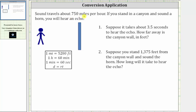Sound travels about 750 miles per hour. If you stand in a canyon and sound a horn, you will hear an echo. Number one: suppose it takes 3.5 seconds to hear the echo. How far away is the canyon wall in feet?